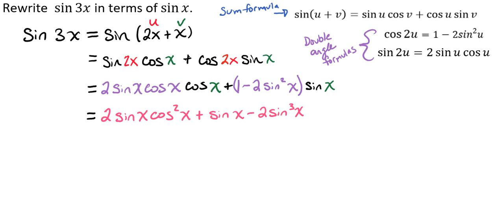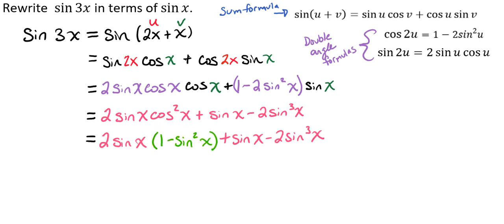So we're going to use the Pythagorean identity, and we're going to go ahead and get rid of this cosine squared of x so that everything is in terms of sine. That gives us 2 times the sine of x times the quantity 1 minus sine squared of x, plus the sine of x minus 2 times the sine cubed of x.